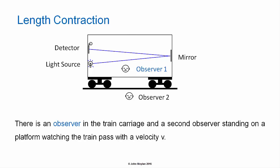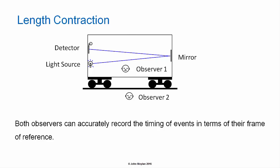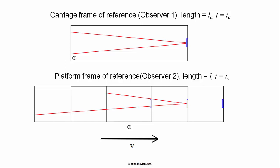There is an observer in the train carriage and a second observer standing on a platform watching the train pass with a velocity V. Both observers can accurately record the timing of events in terms of their frame of reference. In the carriage frame of reference, the observer within the carriage would measure the length as L subscript 0 and the time as T subscript 0. In the platform frame of reference, the observer would measure the length as L and the time as T subscript V.